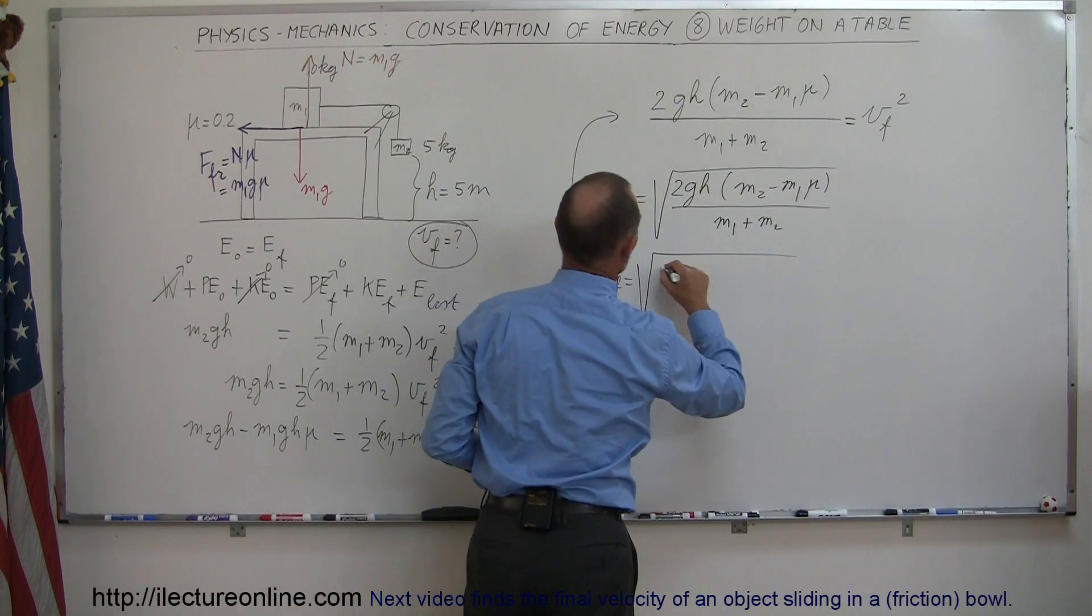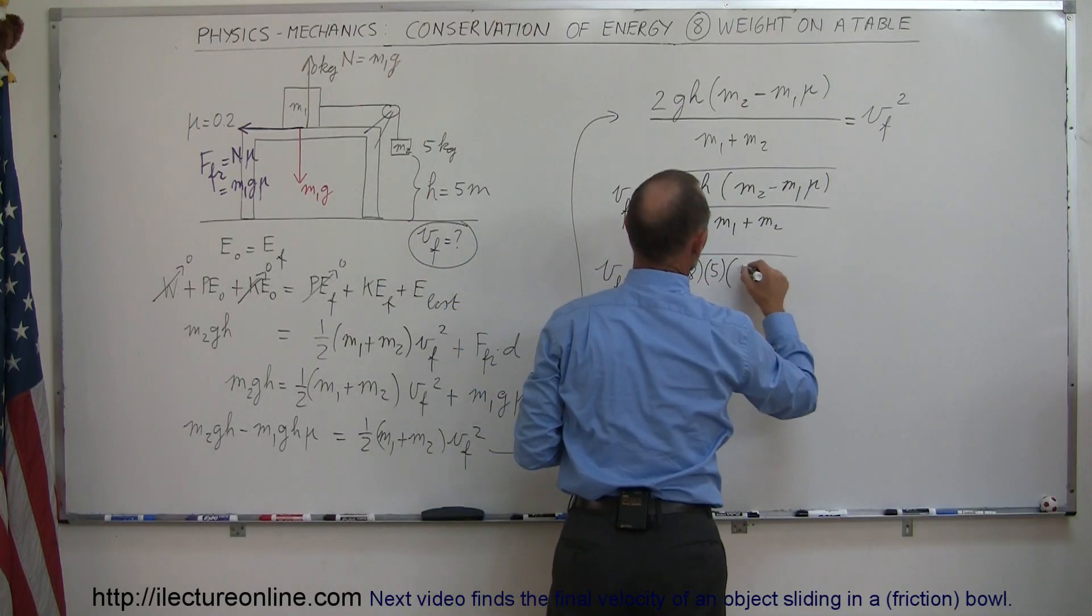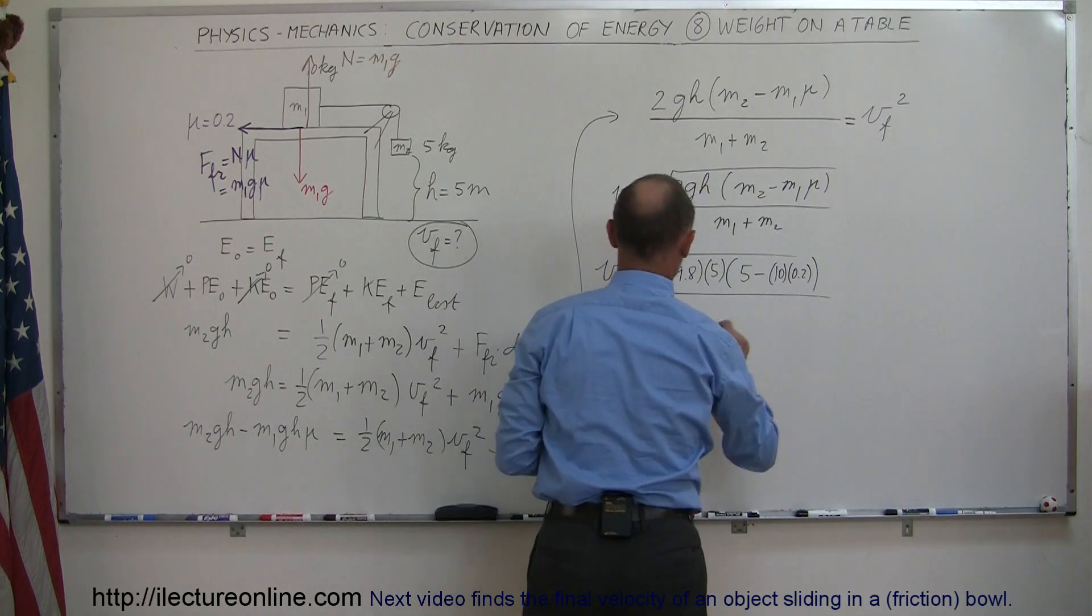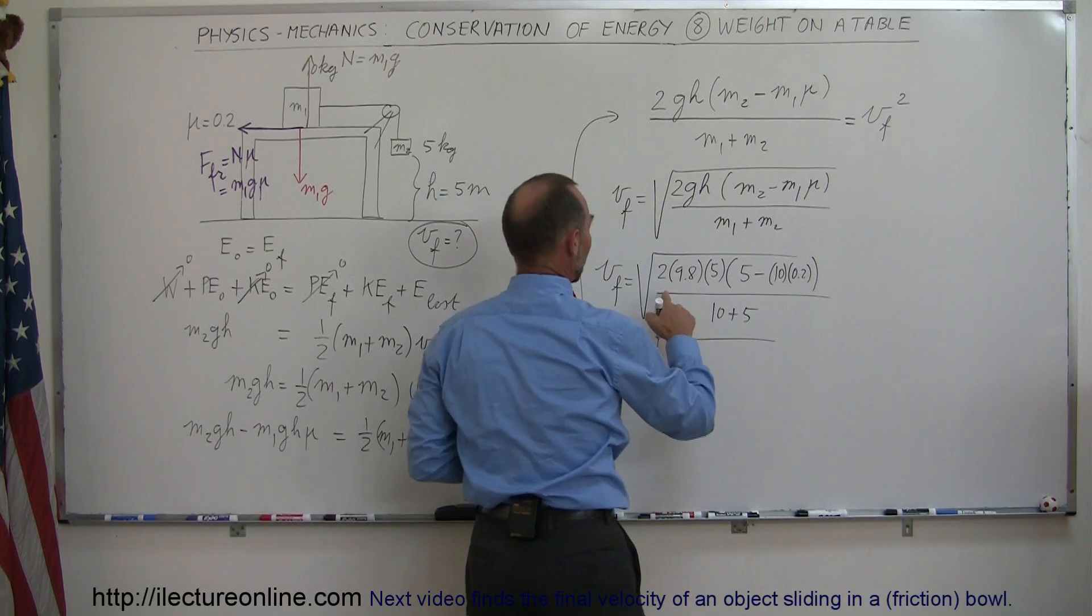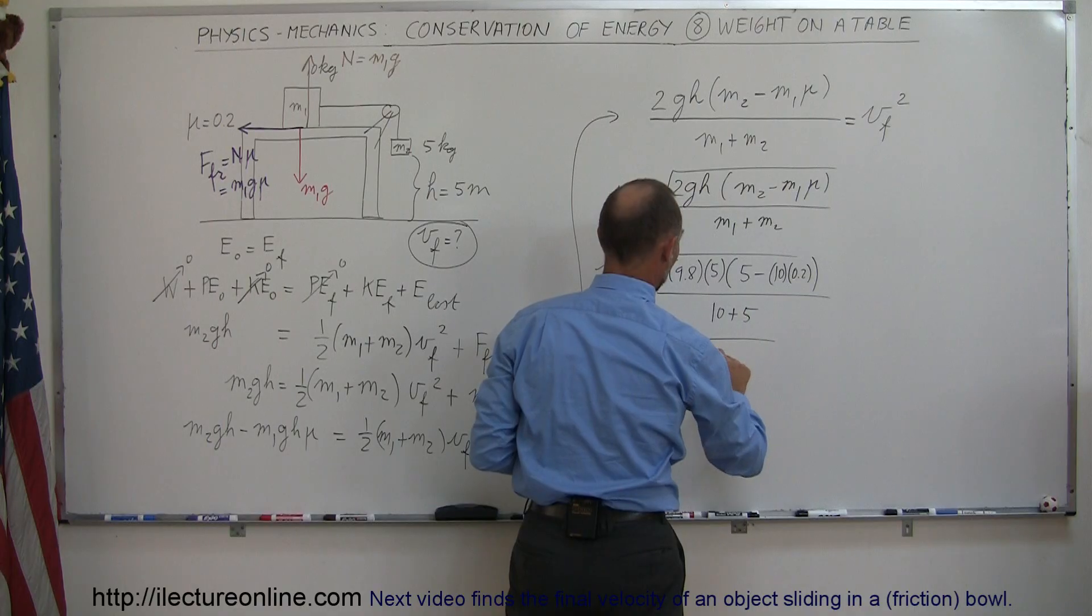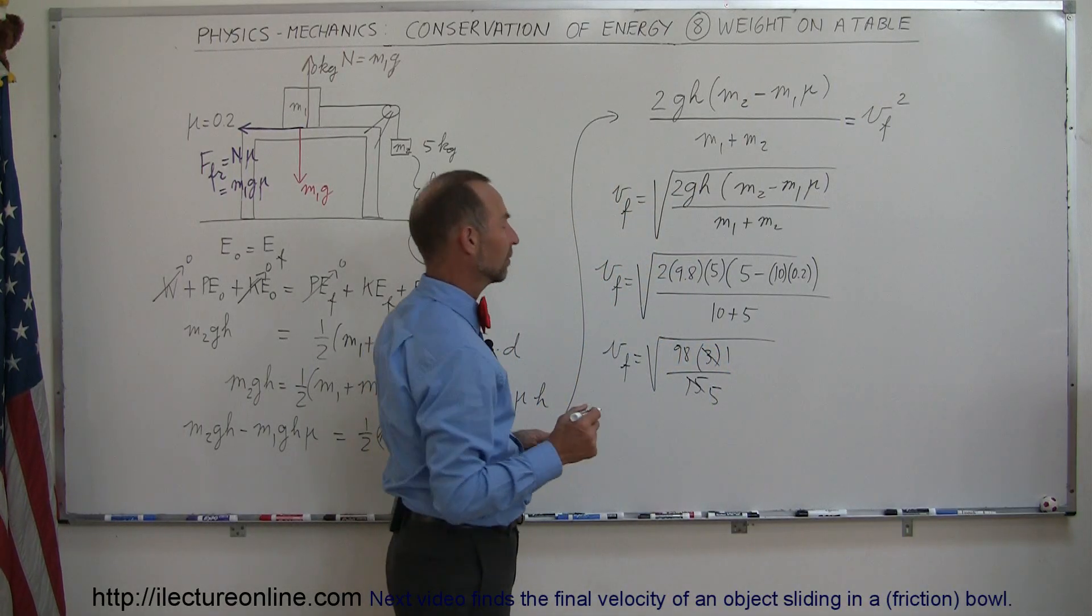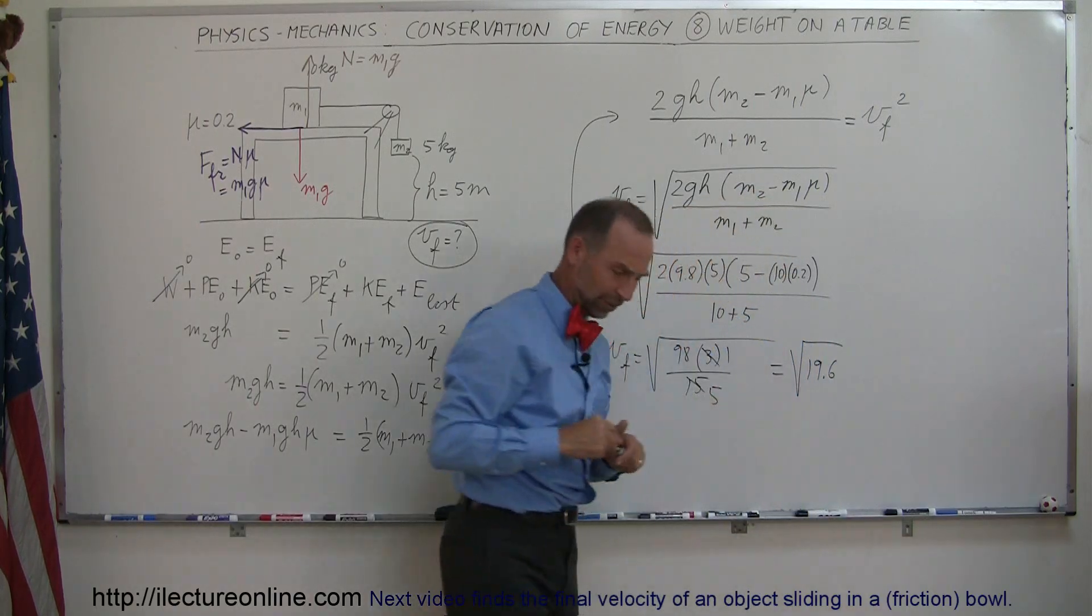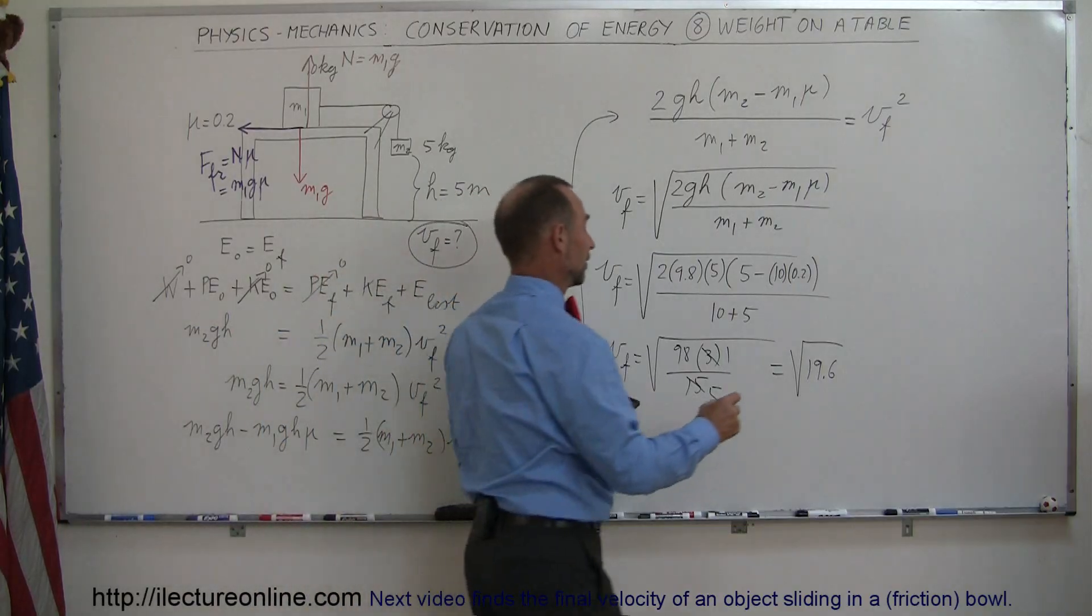So now let's plug the numbers and see what we get. v final is equal to the square root of 2 times g, which is 9.8 meters per second squared, the h is 5 meters, times m2 which is right here, 5 kilograms, minus m1 which is 10, multiplying times mu which is 0.2, and the whole thing divided by 10 + 5. Keep it in the same order. Now let's simplify this. So we have v final is equal to the square root of, that would be 10 times 9.8 so that's 98, times 5 minus 10 times 0.2 is 2, so that's 3, all divided by 15. And of course 3 and 15 simplifies to 1 and 5, so that's 98 divided by 5, which is 5 goes into 100 20 times, so that would be 19.6. So this is the square root of 19.6, and what's the square root of 19.6? Let's find out. 19.6 take the square root, and it's 4.43 meters per second.